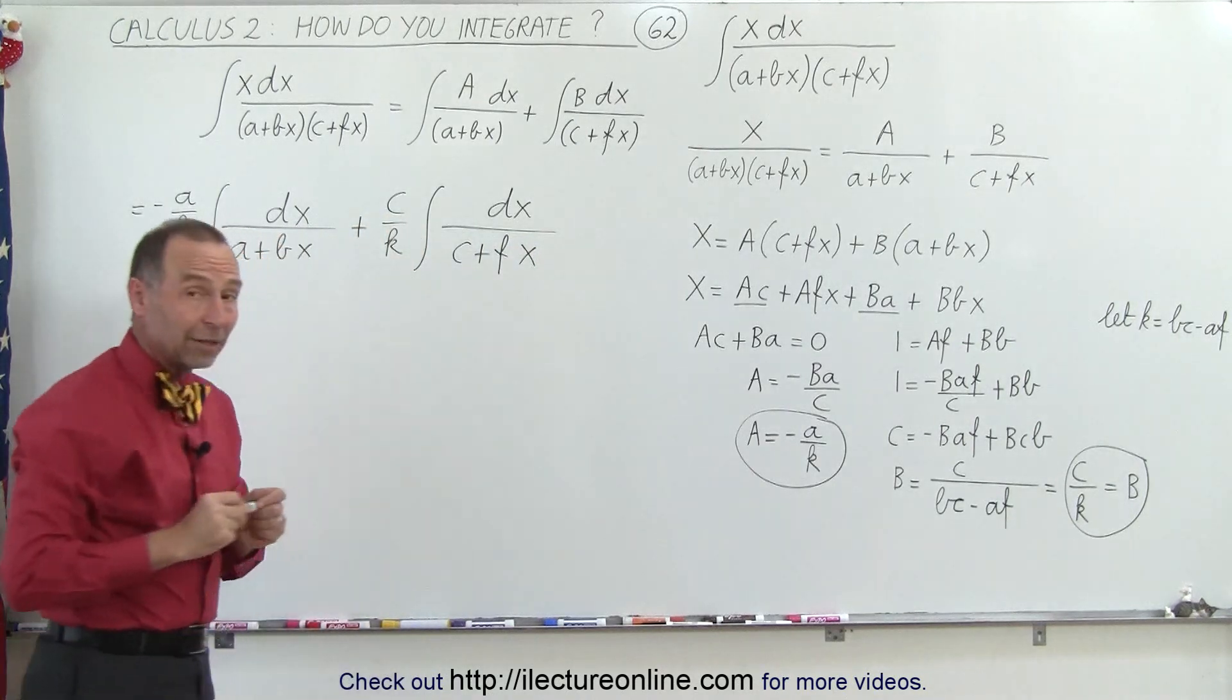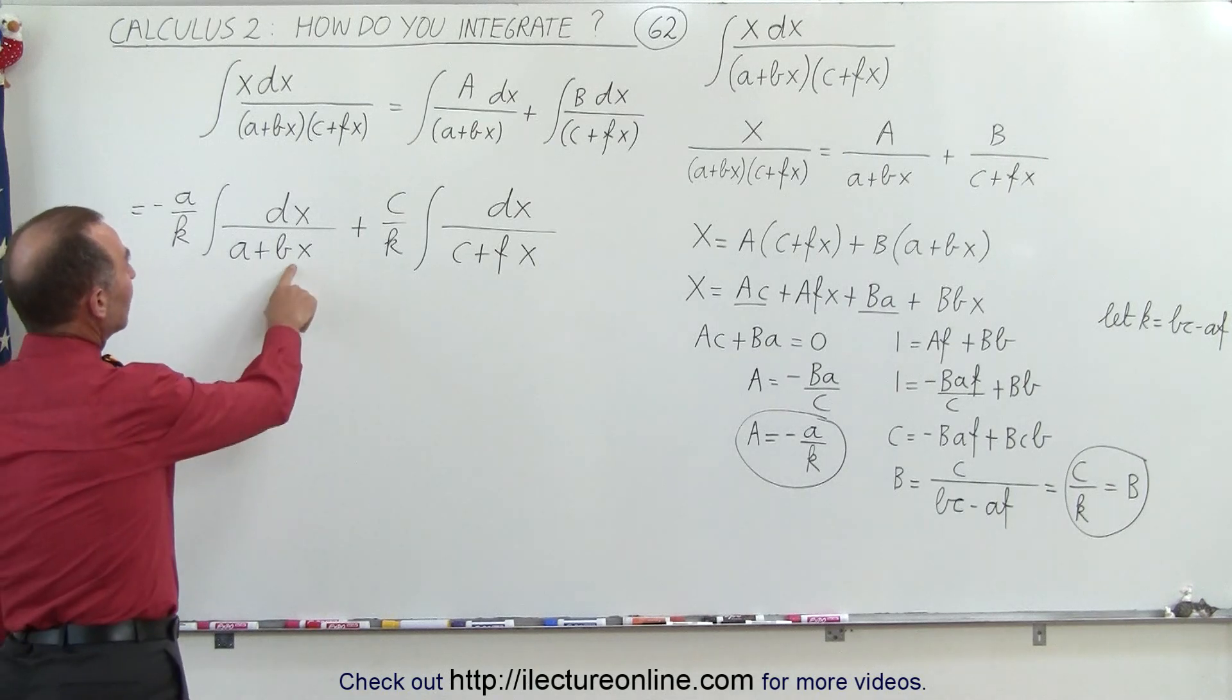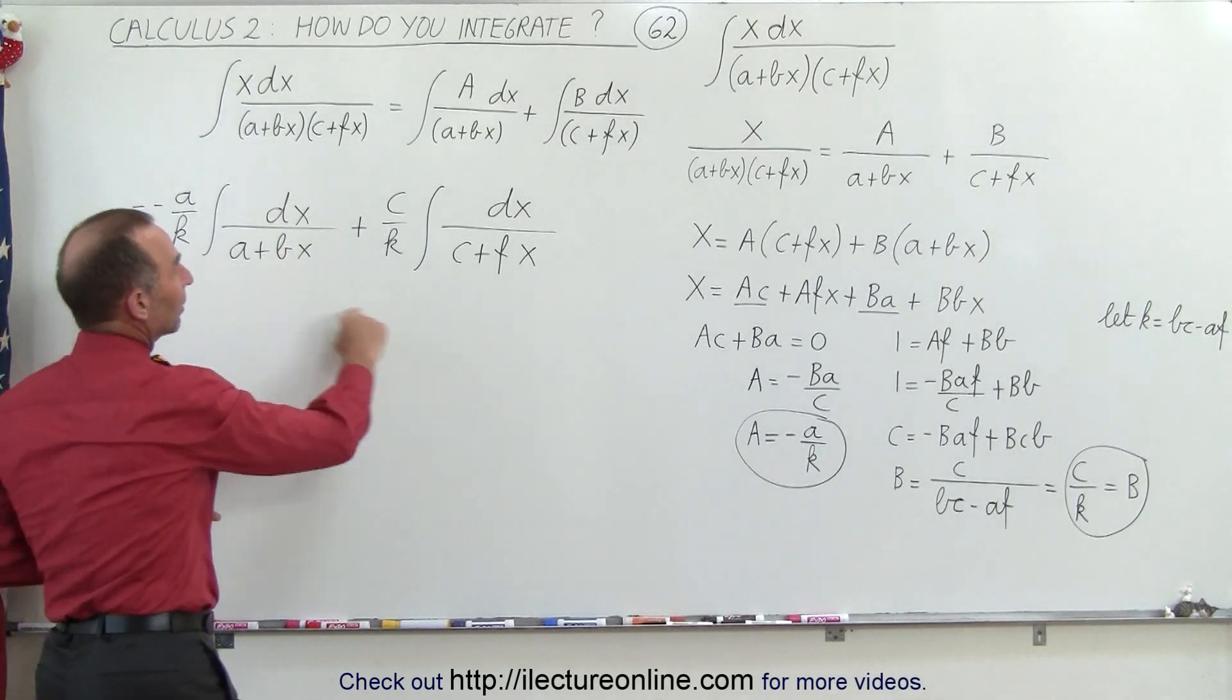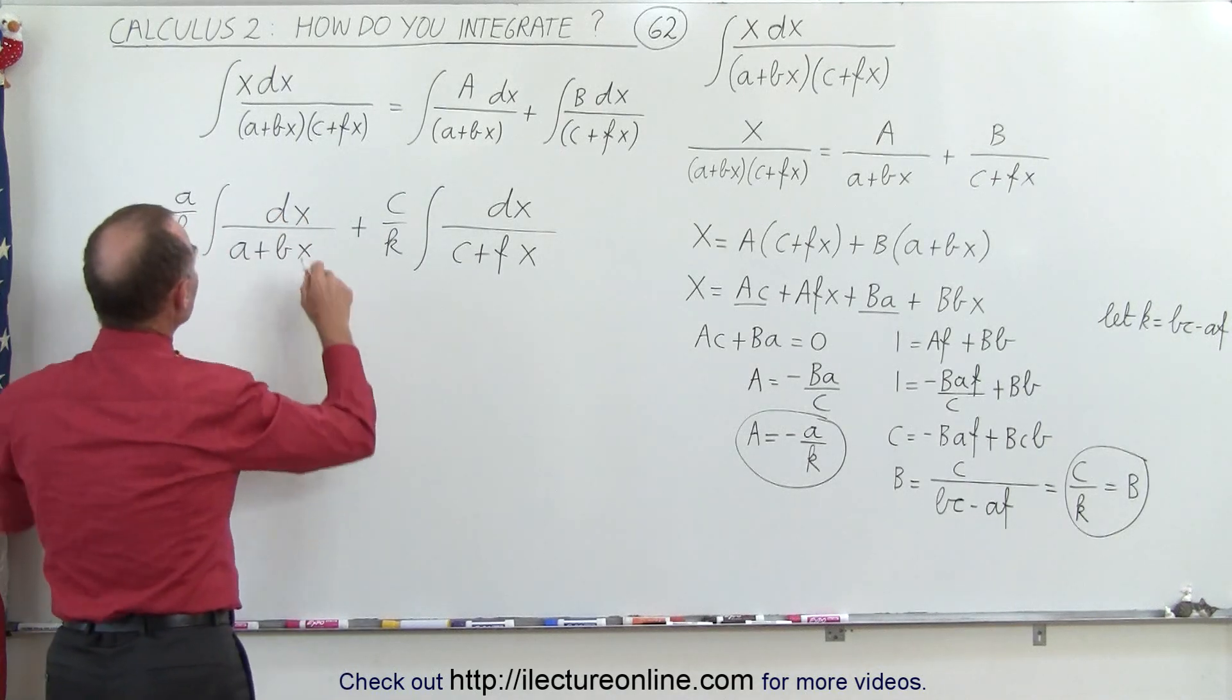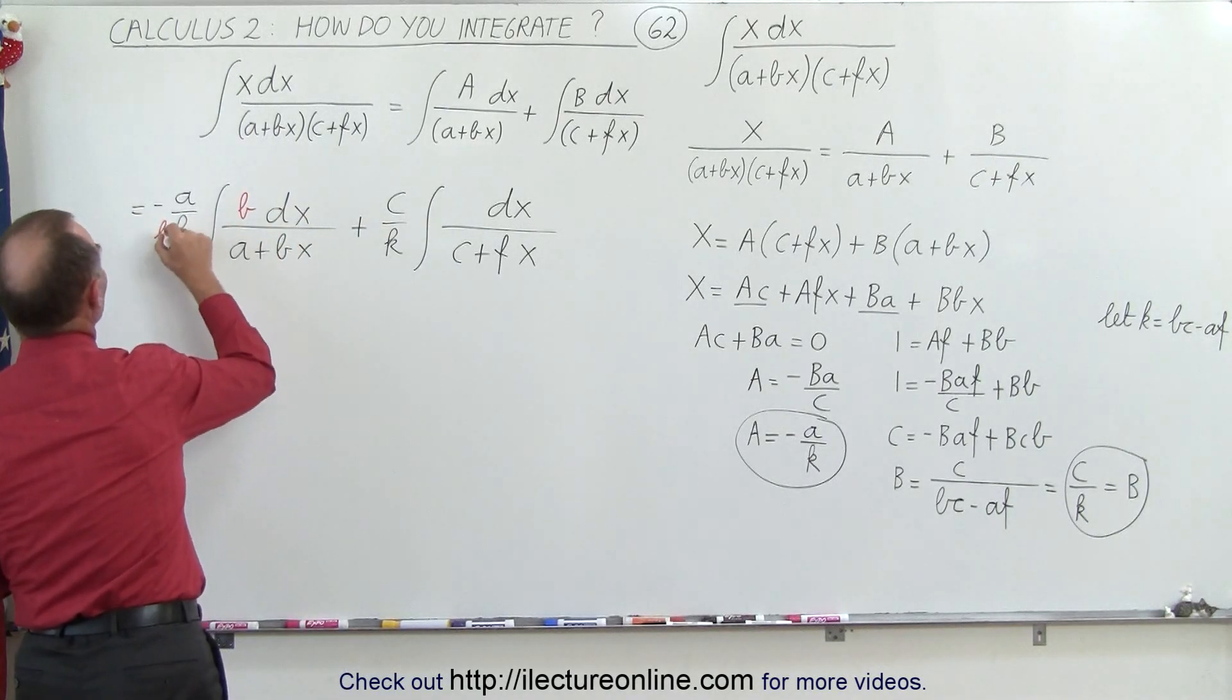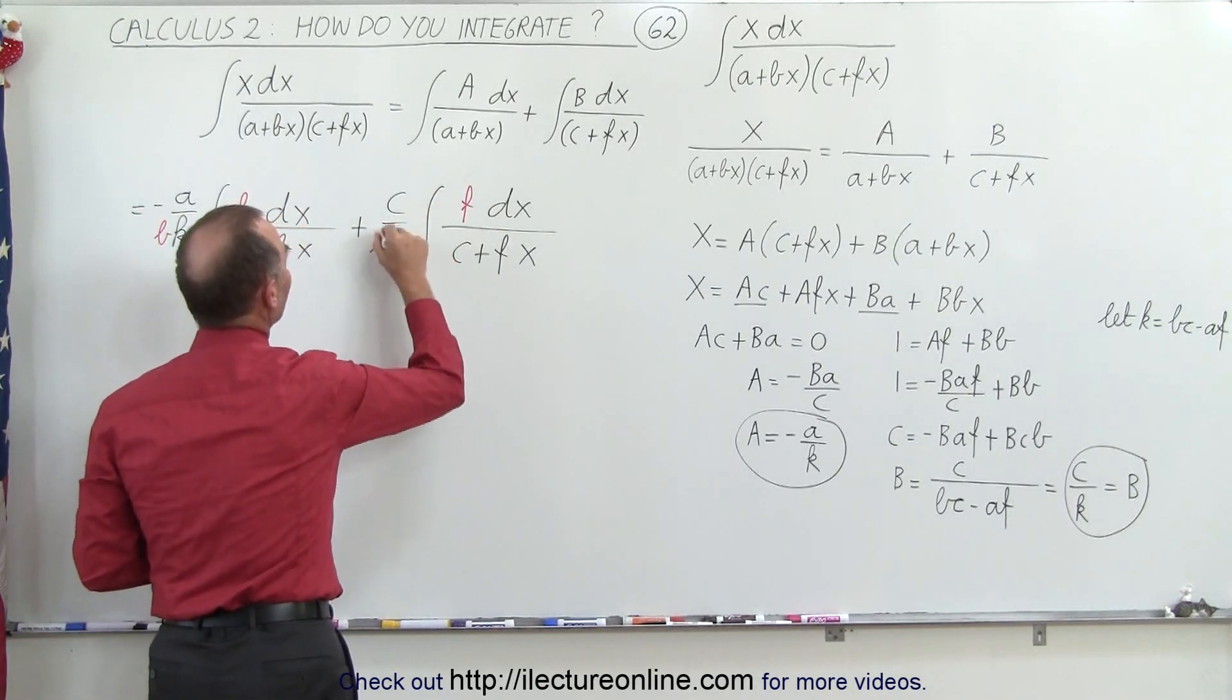And then we realize we can actually integrate those using the natural log as a solution, except we need a b dx in the numerator here and we need an f dx in the numerator there. So that means we need a b here, which means we need to divide by b and we need an f here, which means we need to divide by an f.